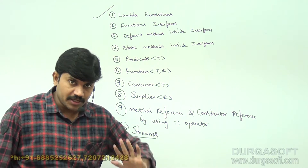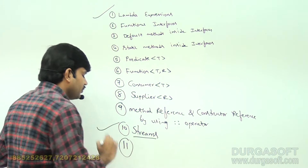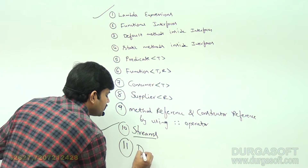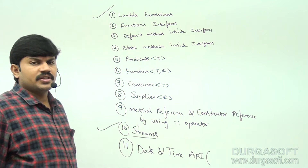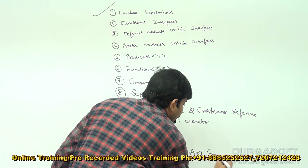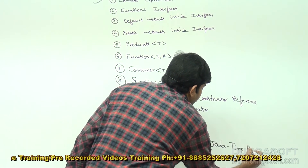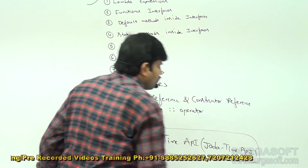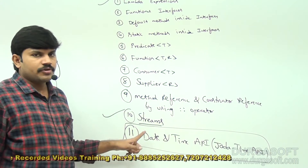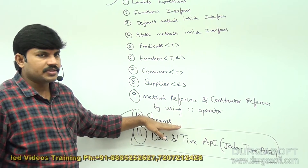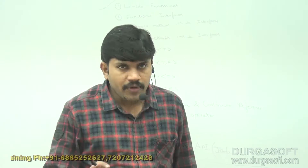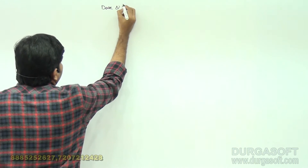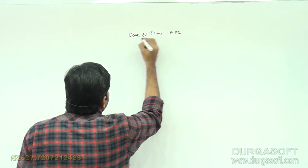The next topic we have to discuss is the Date and Time API — a very beautiful concept. This is our next topic as part of Java 1.8 version. In the last 35 videos, we completed the first 10 topics. Now let me talk about the Date and Time API.